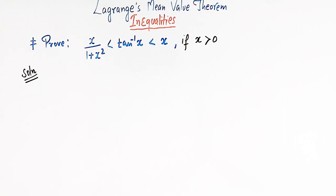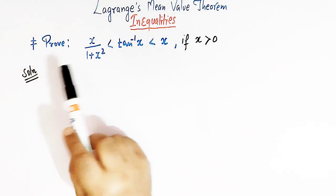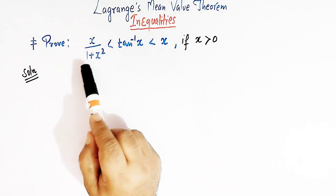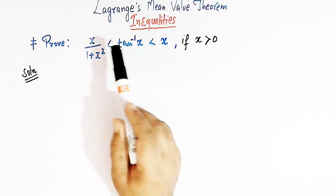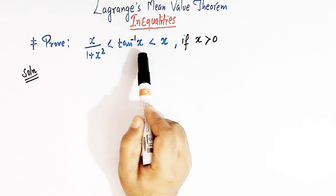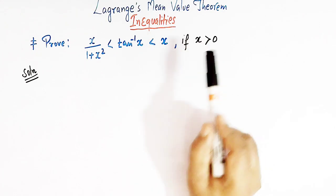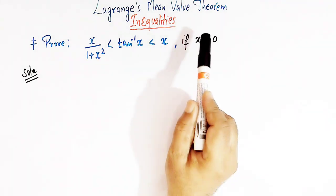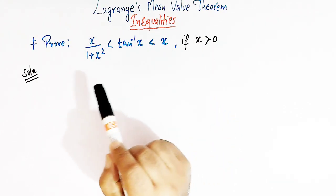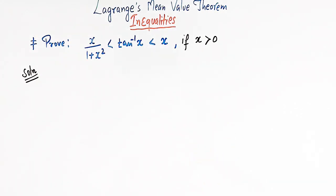In this lecture we are going to discuss this inequality in which we have to prove that x divided by 1 plus x square is less than tan inverse of x, which is further less than x for x greater than 0. I will prove this inequality by making use of Lagrange's mean value theorem. Let us quickly see the statement of Lagrange's mean value theorem.